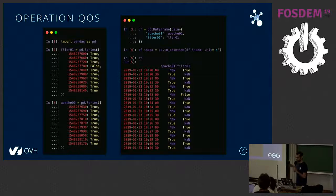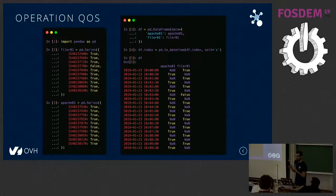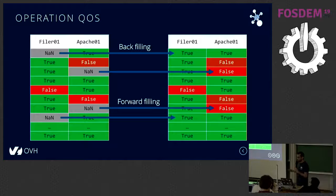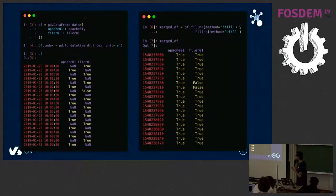We have the Booleans for Filer and Apache, and we can compute the Booleans for example.com. In Pandas, we have two series for Filer and Apache and we want to merge them into a data frame. The probes don't send metrics at the same timestamps, so when we merge the series, there are some gaps with non-values. In Depsy, we apply a forward-filling and back-filling operation between rows to eliminate gaps.